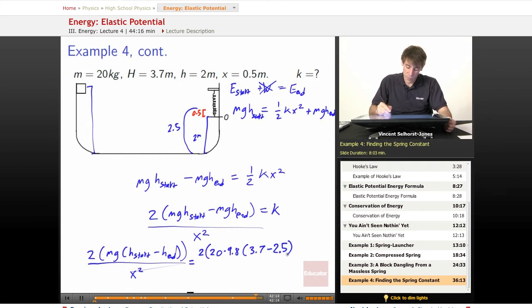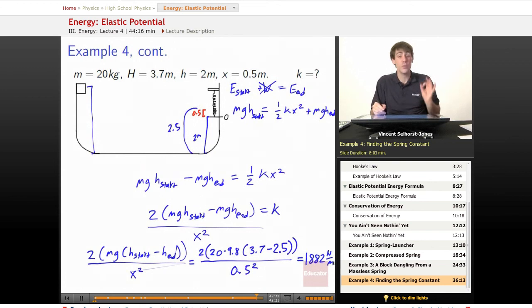divided by what's x, x is the 0.5, and it's squared. Punch that into a calculator, and our final answer is 1882 newton meters. Newtons, not newton meters, newtons per meter. Newtons meter is work. Newtons per meter, 1882 newtons per meter is equal to our k.